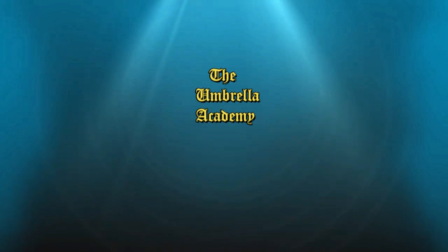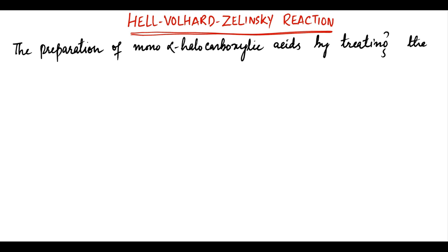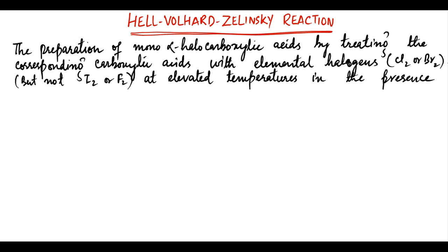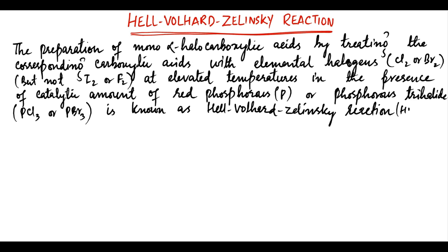In this lecture we will discuss the Hell-Volhard-Zelinsky reaction of carboxylic acids. The preparation of mono-alpha-halocarboxylic acids by treating the corresponding carboxylic acid with elemental halogen — Cl2 or Br2, but not I2 or F2 — at elevated temperatures in the presence of catalytic amounts of red phosphorus or phosphorus trihalide, PCl3 or PBr3, is known as the Hell-Volhard-Zelinsky reaction, or HVZ reaction.